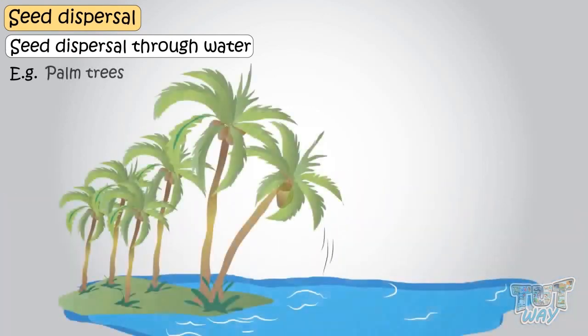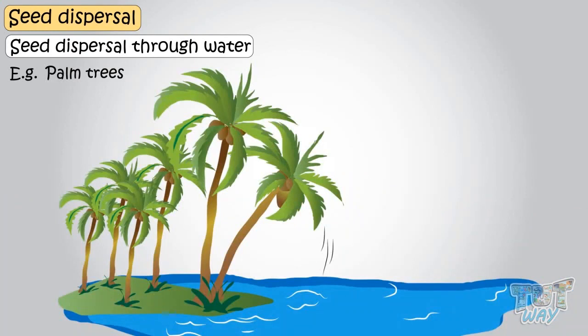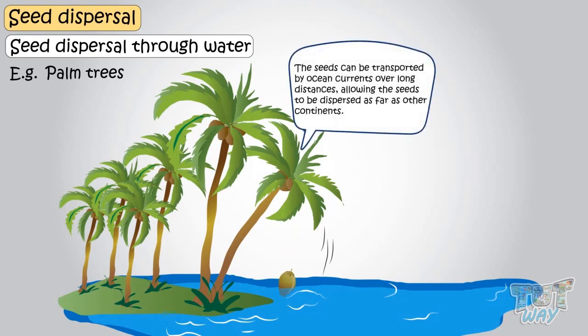The seeds of the pond trees can also be dispersed by water. If they grow near oceans, the seeds can be transported by ocean currents over long distances, allowing the seeds to be dispersed as far as other continents.